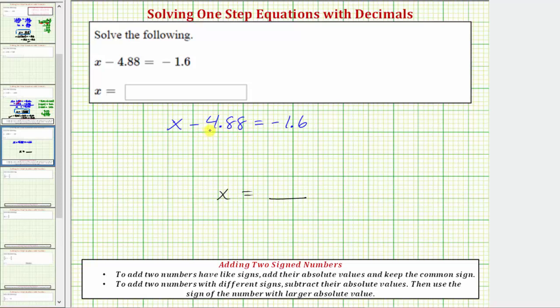The opposite operation of subtraction is addition, and therefore to undo minus 4.88, we will add 4.88 to both sides of the equation.